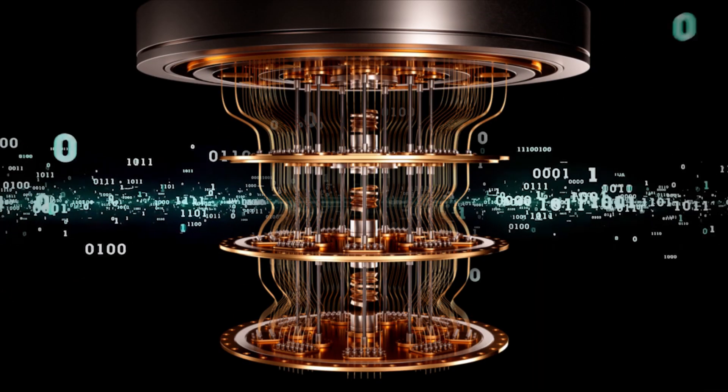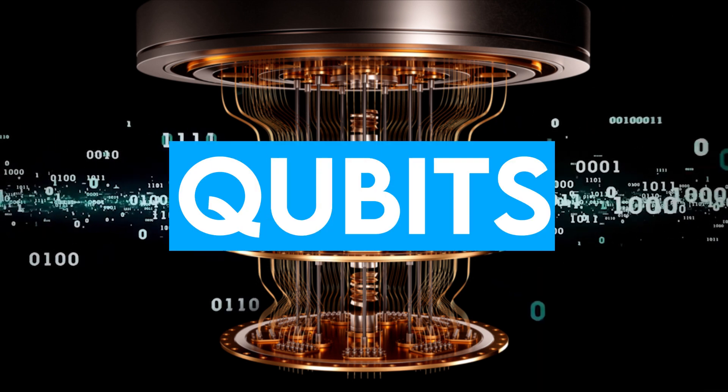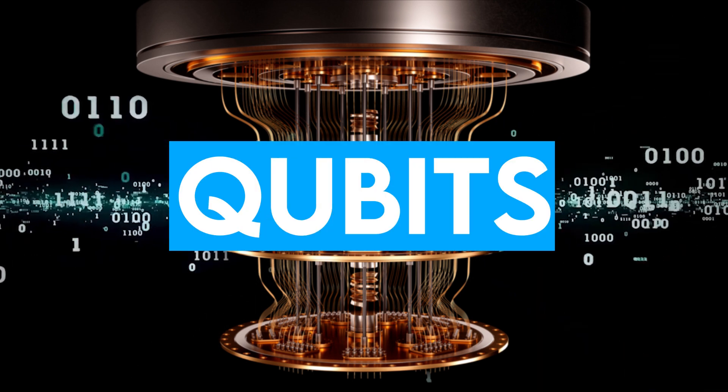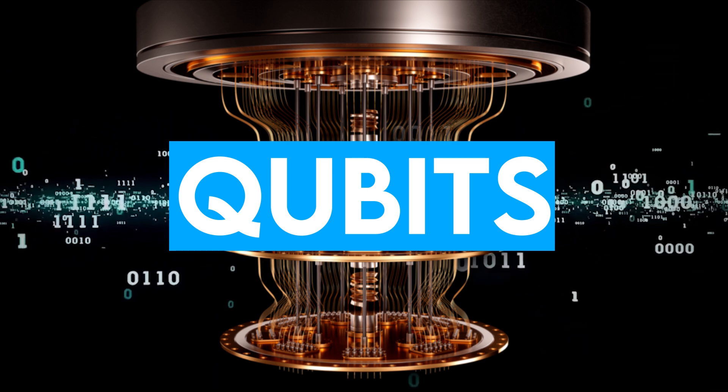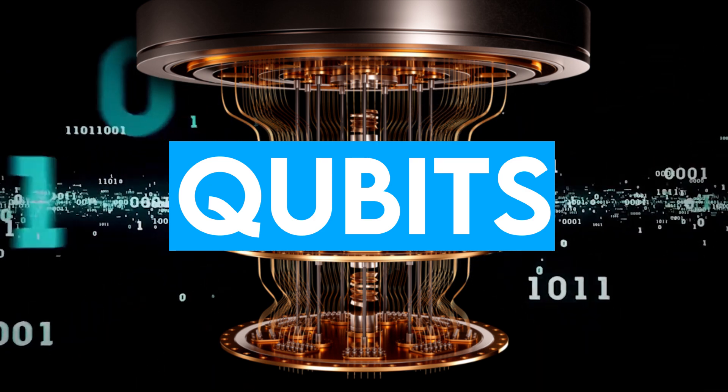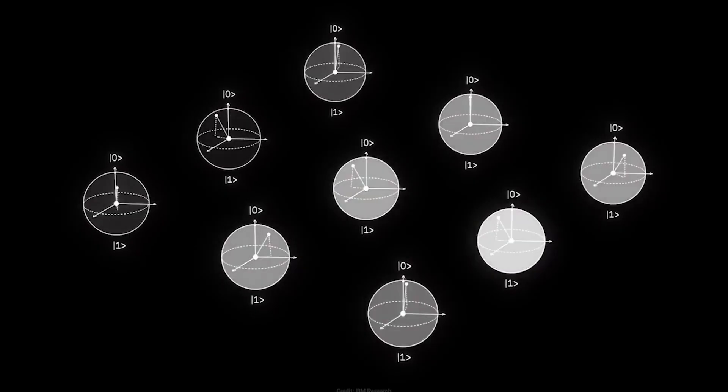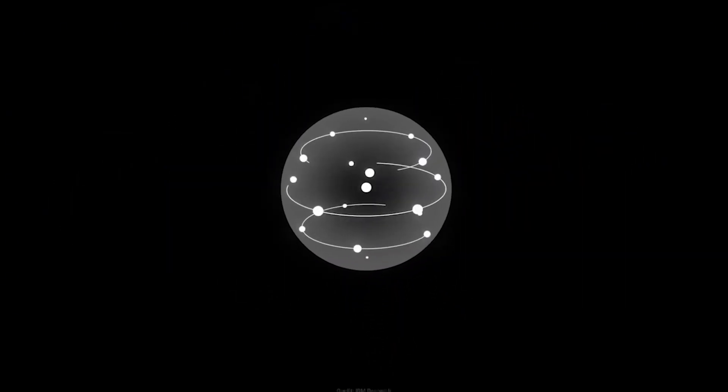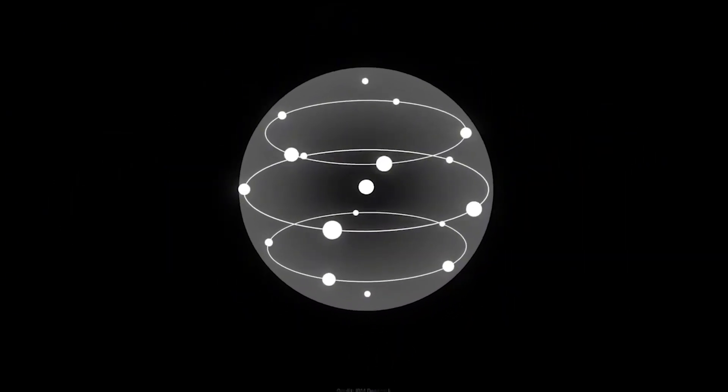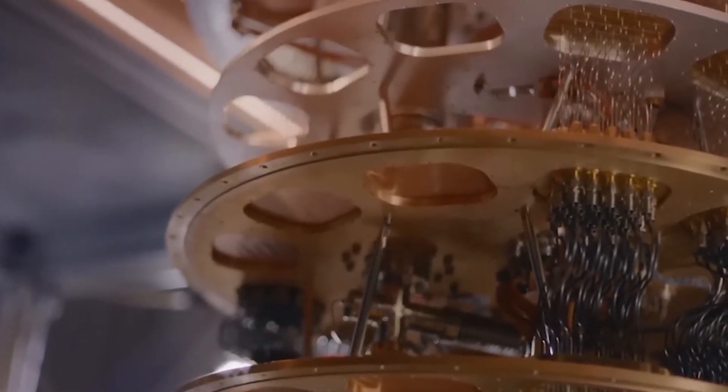This connection is entanglement. In quantum computers, entangled qubits are linked in a similar way, and this allows them to work together in ways that classical bits can't. Because qubits can be in multiple states at once and entangled, quantum computers can perform many calculations simultaneously. This gives them a huge advantage for certain types of problems.